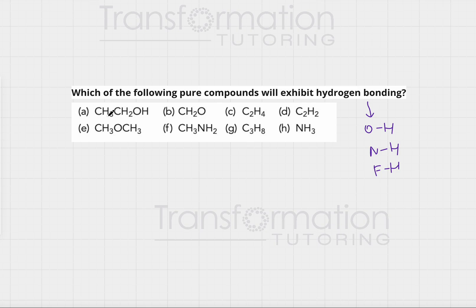So, if you look at A, we have CH3CH2OH. Does this molecule have OH, NH, or FH? Yes, it does. It has an OH, so it is capable of hydrogen bonding.